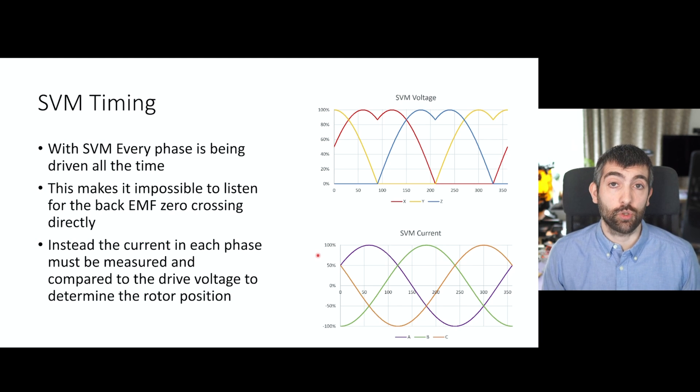However, there is one problem with pure sinusoidal drive that SVM cannot solve. And that is that with SVM every phase is being driven all of the time. We always have active driving current through the phase. Let's look at phase A. It's always being driven. I mean, maybe just at an instant there's no driving current, but it's for an instant and then we're driving in the opposite direction. And this makes it impossible to listen for the back EMF zero crossing directly. You remember with block commutation, we had a period where we weren't driving the phase and that was when we would listen for the back EMF of the motor so that we would know where the rotor is relative to the coil. Well, with SVM, we don't have that information. Instead, with SVM, you have to measure the current in each phase all the time and you have to measure the voltage that you're applying to each phase. And then you do a calculation to work out the back EMF based on the voltage and current.